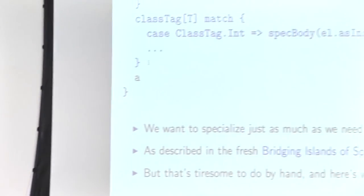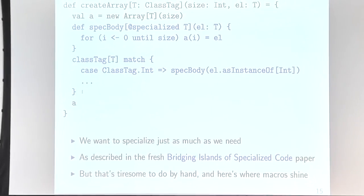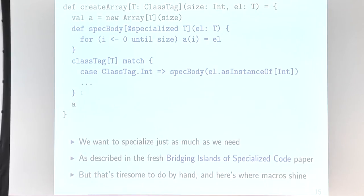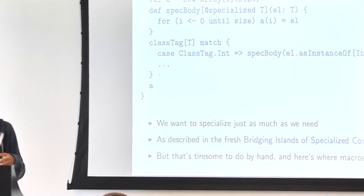Another prominent issue with specialization is code bloat: one type parameter means 10 copies, two type parameters means 100 copies. What we really want is to specialize only the small relevant piece of code. My colleagues from EPFL — Vlad Ureche and Nicolas — showed in a recent paper that you can do this transformation without significant performance degradation, dispatching on runtime type information to get fully specialized, optimally performing code.